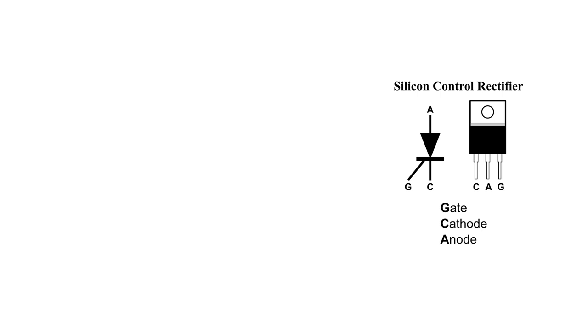You can see that the leads have been labeled. You can see where the gate, cathode and anode are.